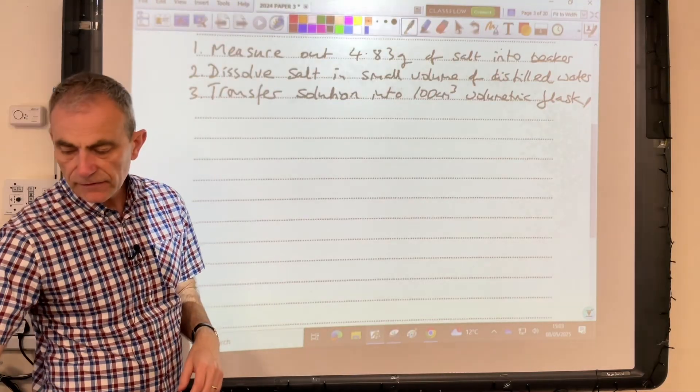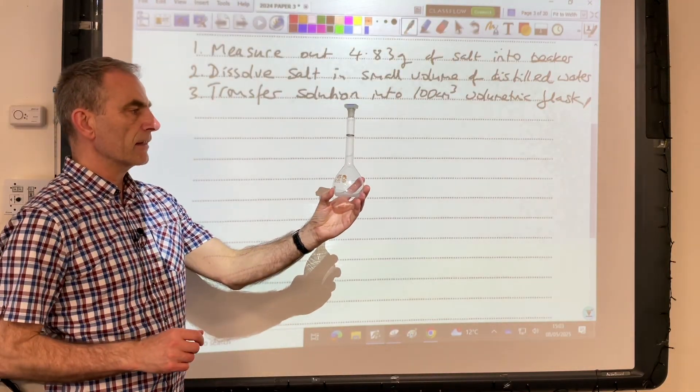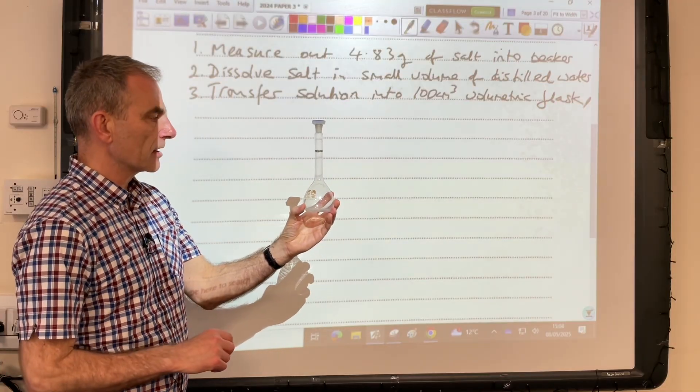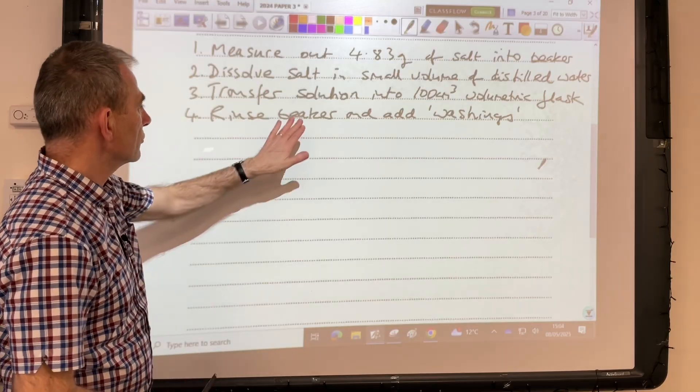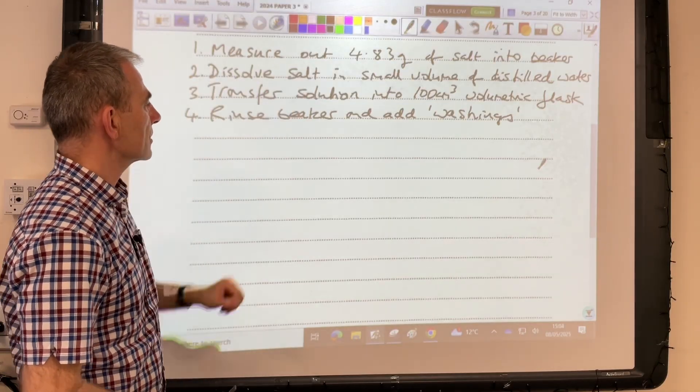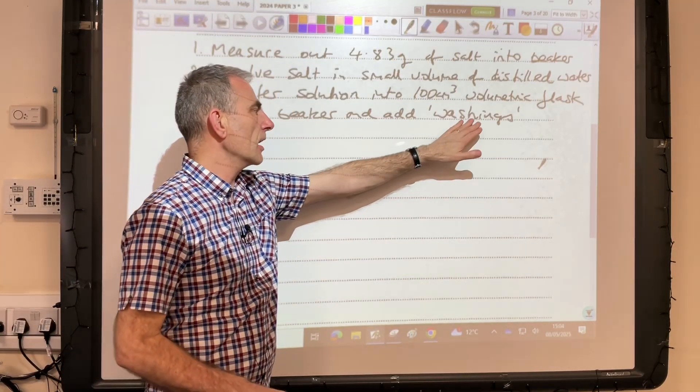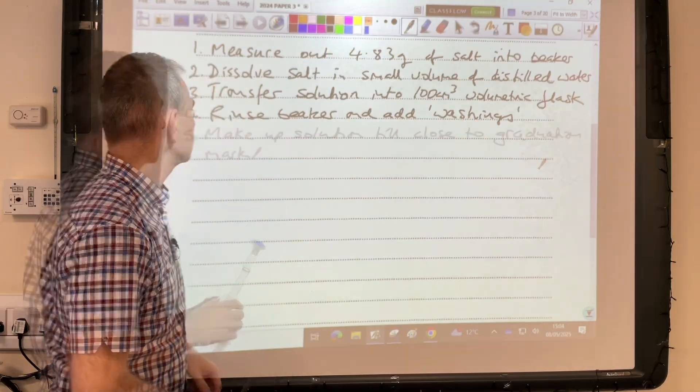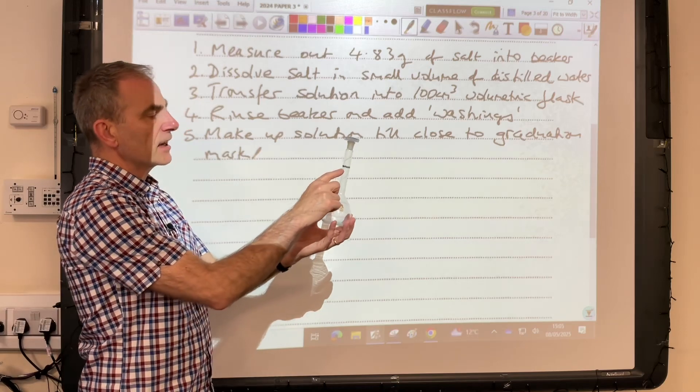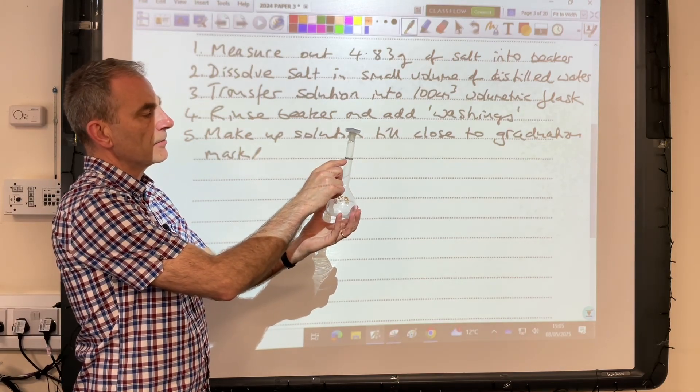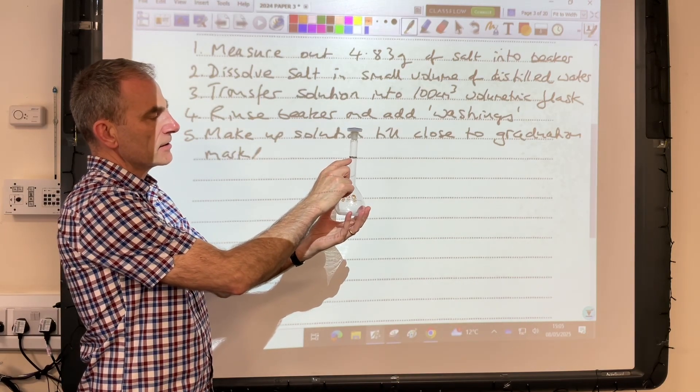Next thing you do is transfer that solution into a 100 cm³ volumetric flask—so that's something like that, not a conical flask, that's a common mistake there. Then to make sure that all of the salt's gone into the volumetric flask, they would rinse out the beaker that they made the original solution in and they would add the washings. Next thing to do is make up the solution till it's close to that graduation mark. I've exaggerated the graduation mark there with that black felt tip just so you can see it on the video.